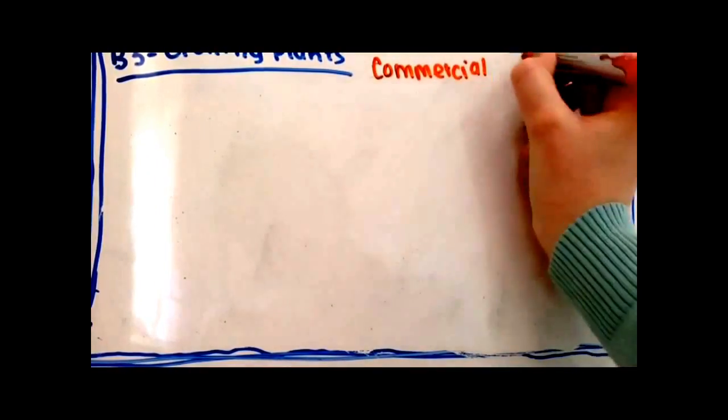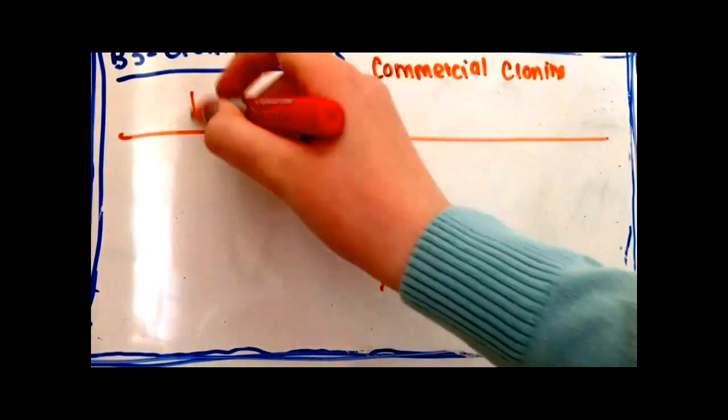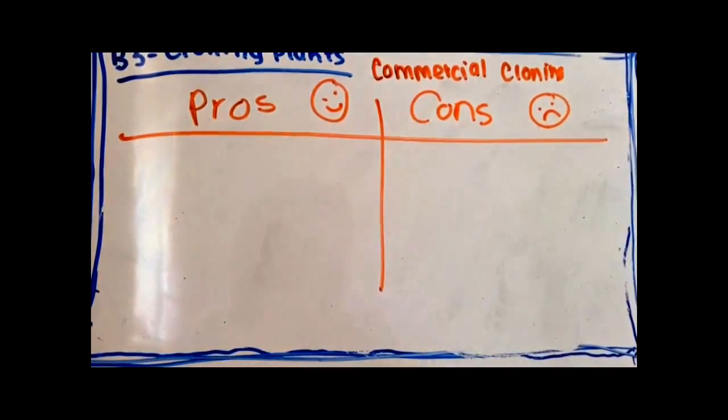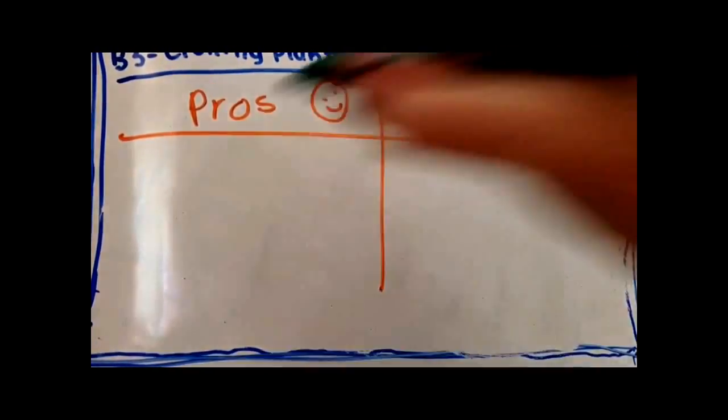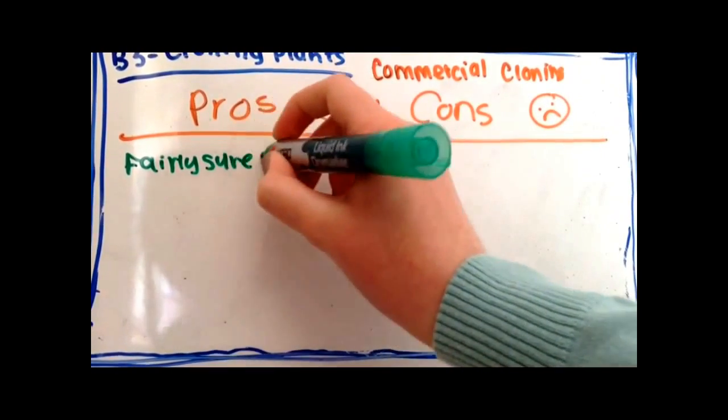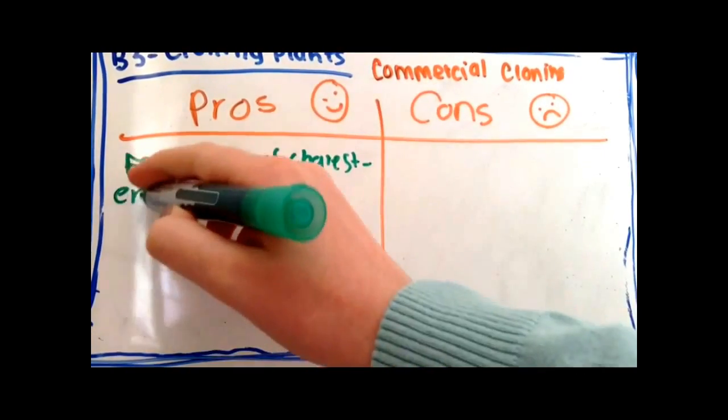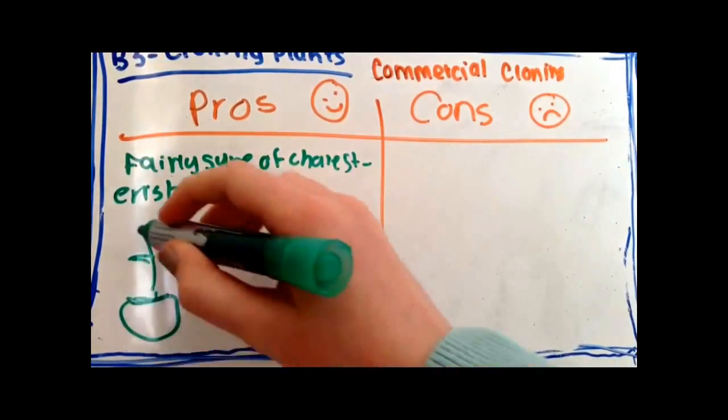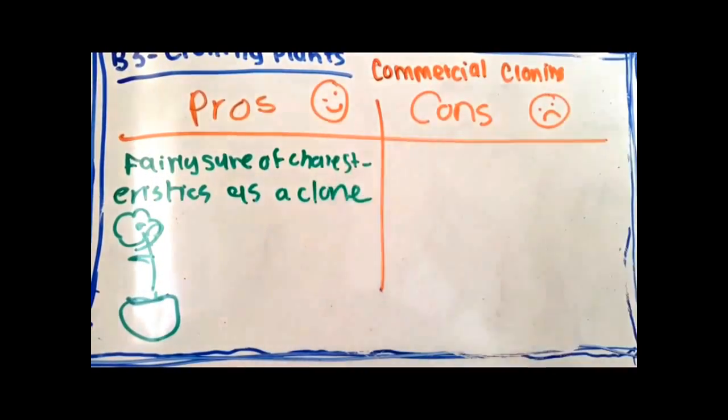The commercial use of cloned plants has pros and cons. A pro is you can be fairly sure of the characteristics of the plant because they're genetically identical to the parent, so you'll only get good ones and won't waste time and money growing less desirable ones.